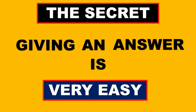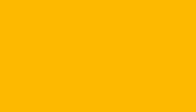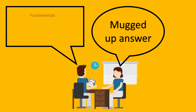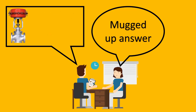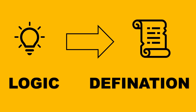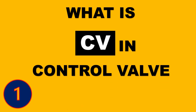He says that giving an answer is very easy but giving a convincing answer is difficult. In a lot of interviews, the interviewer is not interested in a mugged-up answer. What they are interested in are the fundamentals and concepts of the candidate. One of the most important topics for an interviewer is control valves. In this video we will try to learn the logic behind the questions asked and the definition, so you can give a combination of logic plus definition together to make your answer more convincing. The first question, one of the most asked, is: what is CV in a control valve? We look at the concept first and then the definition.